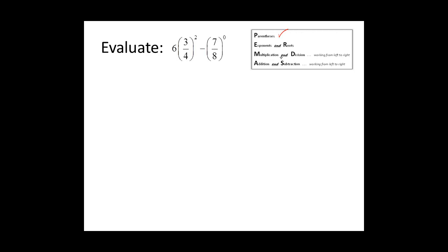We do have some exponents, so that's what we'll do next. We will raise 3 fourths to the second power, which means we will multiply 3 fourths times itself. And we have 7 eighths to the zero power. Any number to the zero power, no matter whether it's a fraction, decimal, or whole number, any real number raised to the zero power is equal to 1.